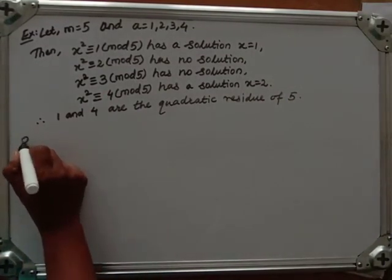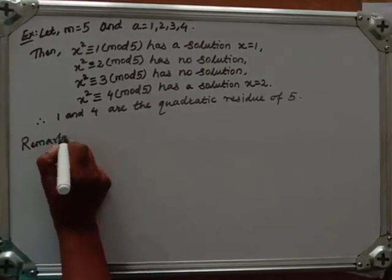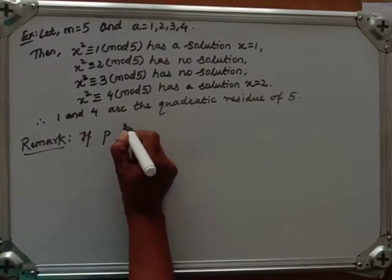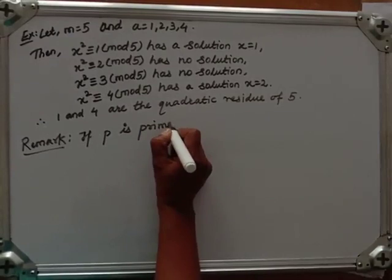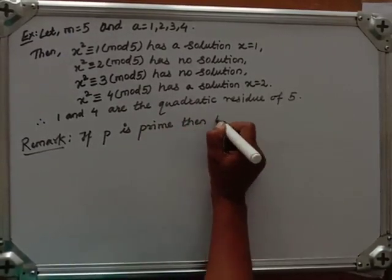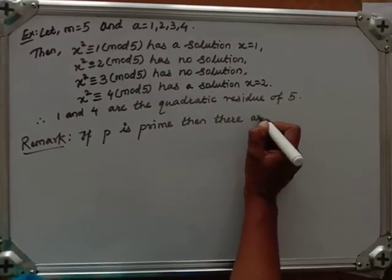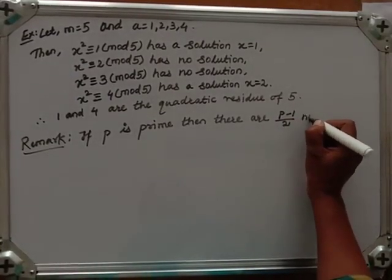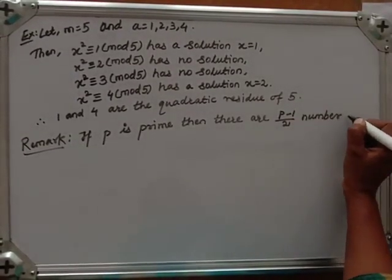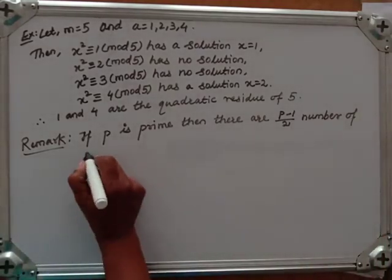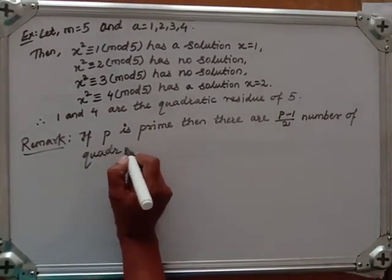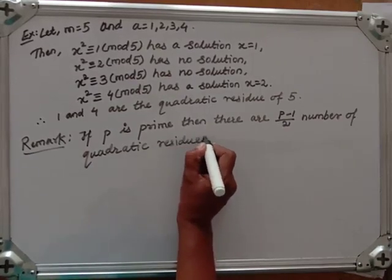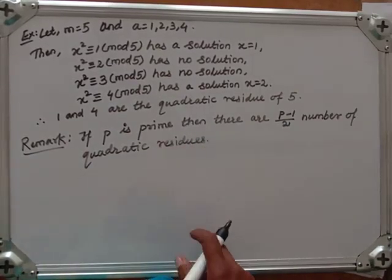Remark: if p is prime, then there are (p−1)/2 quadratic residues modulo p.